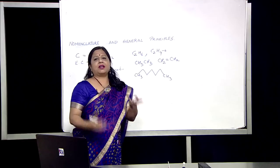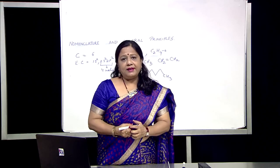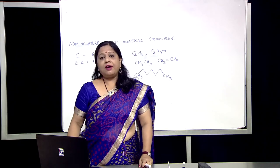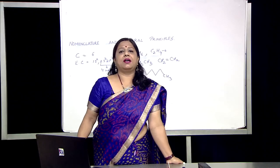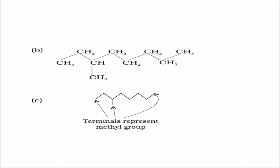From these structures, you can identify and write the name of the compound. For example, you have 3-methyl octane, which can be represented in various forms: CH3, CH2, CH — on the CH there is one methyl group — and then there are 8 carbon atoms in a straight chain. This is one way to represent a molecule of 3-methyl octane. The bond line formula shows terminal positions occupied by CH3 groups and the peaks having carbon.